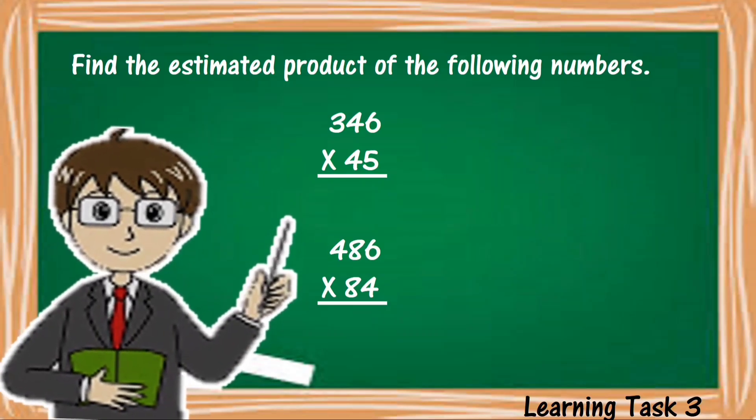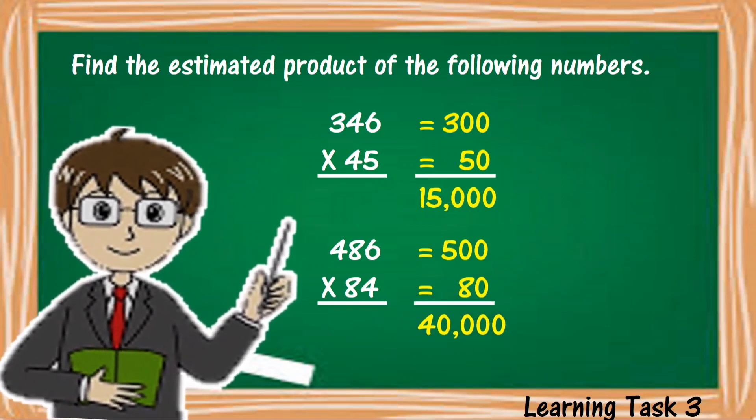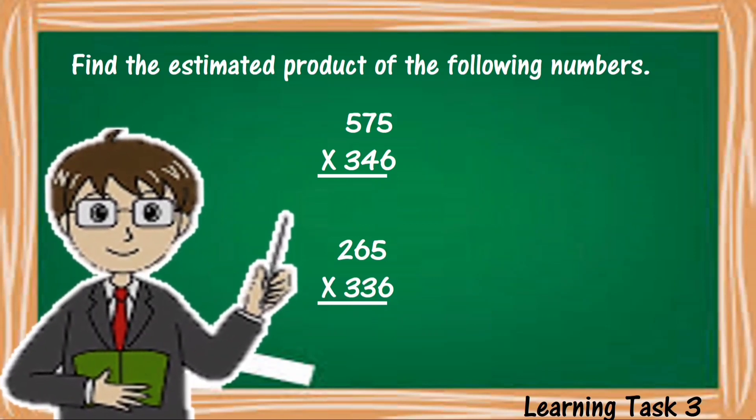Find the estimated product of the following numbers: 346 times 45 and 486 times 84. Give the estimated product of the following numbers: 575 times 346 and 265 times 336.